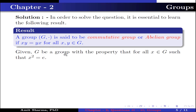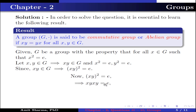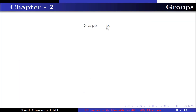Given: G is a group with the property that x² = e for all x in G. Let x, y belong to G. This implies xy belongs to G by the closure axiom, and x² = e and y² = e by the given condition. Since x, y belong to G, by the given condition (xy)² = e, which means (xy)(xy) = e. Now multiplying y on both sides: xy·x·y² = e·y, and since y² = e, we get xyx = y.